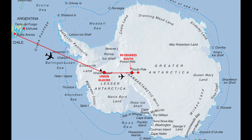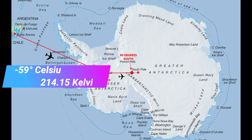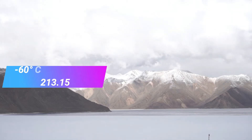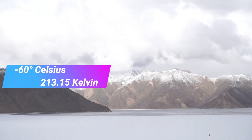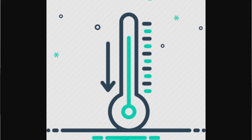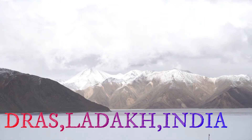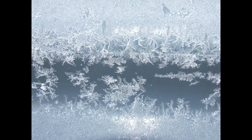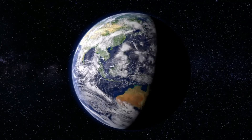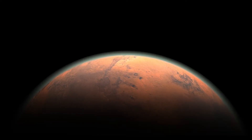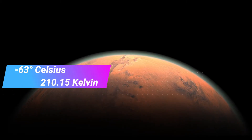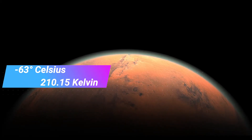The continent of Antarctica is covered with a thick sheet of ice, so its average temperature is minus 59 degrees Celsius or 214.15 Kelvin. Surprisingly, minus 60 degrees Celsius or 213.15 Kelvin is the lowest temperature ever recorded in India, recorded in the city of Dras in Ladakh in the year 1995, making it one of the coldest inhabited places on the planet.